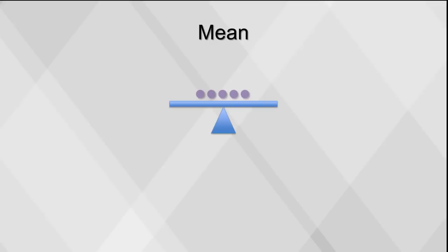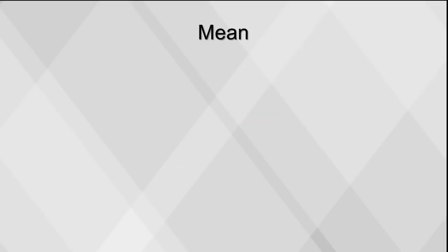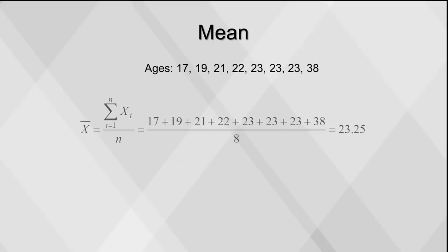The mean is the average or balancing point. To find the mean, find the sum of all the values divided by the sample size. Here's a simple example of calculating the mean of the age of several participants in a study. Sigma is the sum, and x-bar is the sample mean. After adding the values together and dividing by the number of values, 8, we arrive at our mean: 23.25.